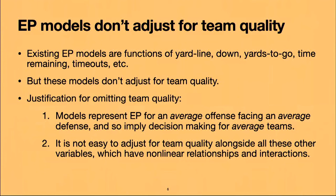If you notice, in that column of features, these models do not adjust for team quality. They're functions of yard line, down, yards to go, time remaining, timeouts — but not team quality. There are several reasons for this: you already have a lot of features, and throwing in all these team quality features is a lot — it's nonlinear, it's interacting, it's really hard, you can overfit. It's also justified by saying these models represent expected points for an average offense facing an average defense, implying decision-making for average teams. There's a quote from the Rommer paper that says exactly this.